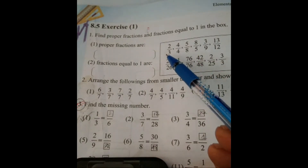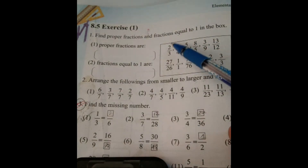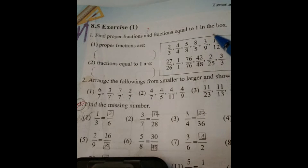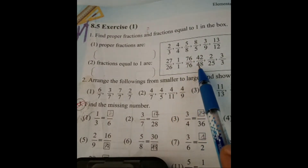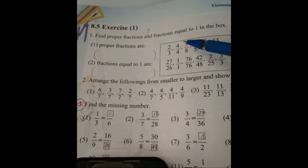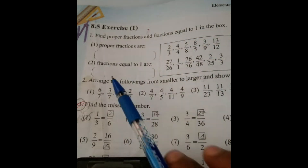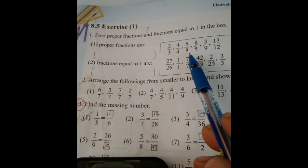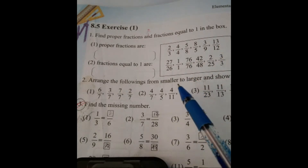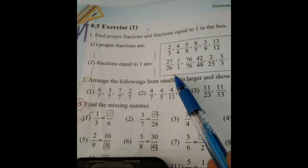Where the denominator is greater and the numerator is smaller, those are proper fractions. For example: two by three, five by eight, three by nine, 42 by 48, and two by 25 — all these are proper fractions. Where the numerator is greater, those are improper fractions: eight by five, 13 by 12, and 27 by 26 — all improper fractions.